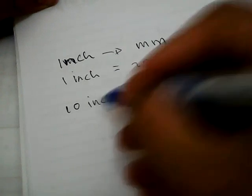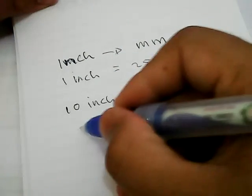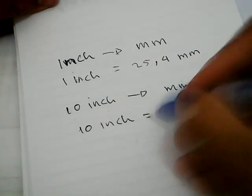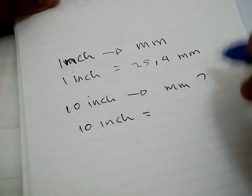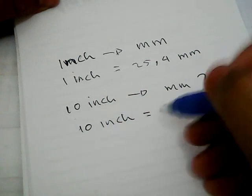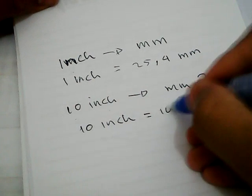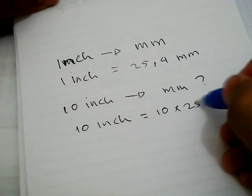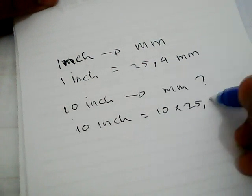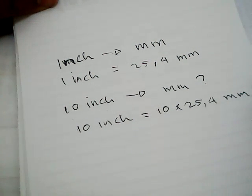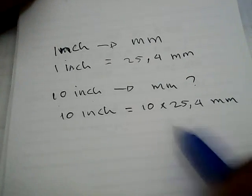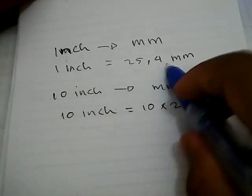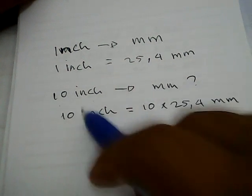The first thing you need to do is write down 10 inches again, and then give it an equal sign. It equals 10 multiplied by 25.4 millimeters.